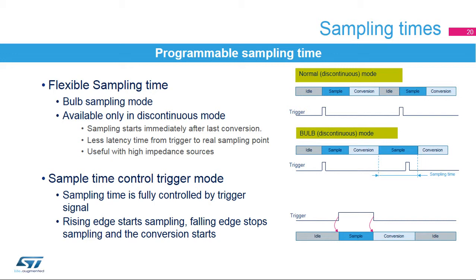Two new sampling mechanisms have been introduced. The first is bulb mode, which works only in discontinuous mode. In this mode, sampling starts immediately after the last conversion finishes without going to idle state, providing less latency from the trigger signal to the start of conversion. The very first ADC conversion after the ADC is enabled is performed with the sampling time programmed in SNP bits; bulb mode is effective starting from the second conversion. The second mechanism is sampling mode based on trigger signal: rising edge starts sampling, falling edge stops sampling and the conversion starts.